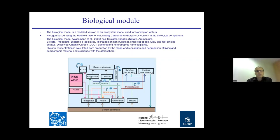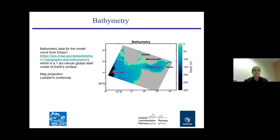Oxygen is calculated from photosynthesis and respiration, and from degradation of living and dead organic material, as well as exchange with the atmosphere at the surface.